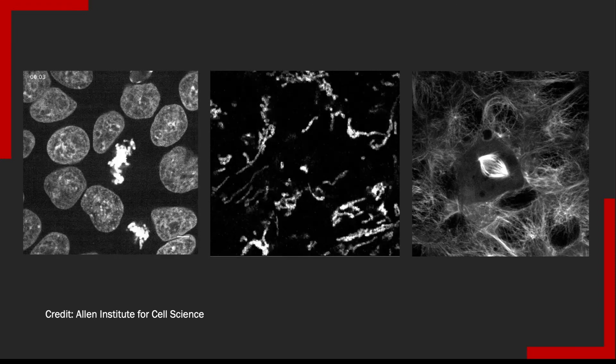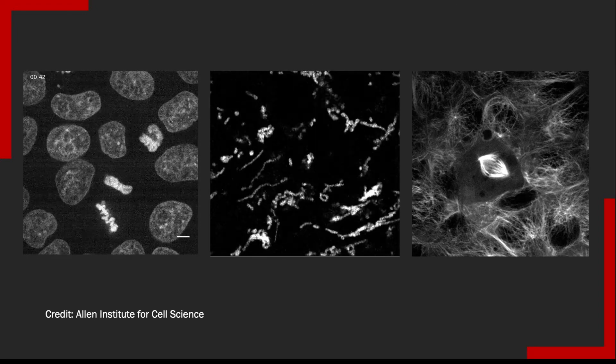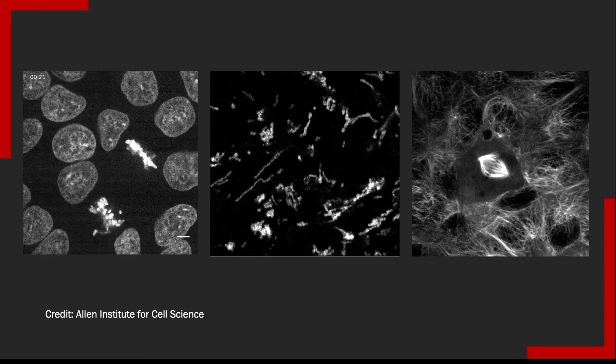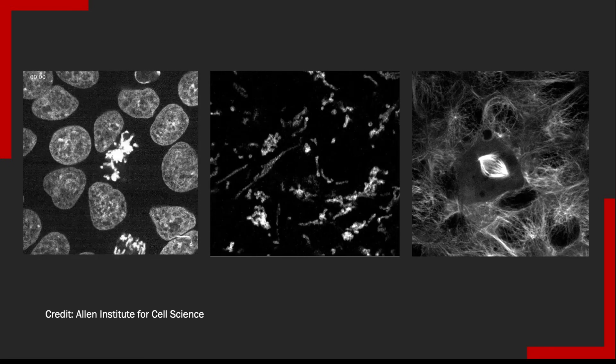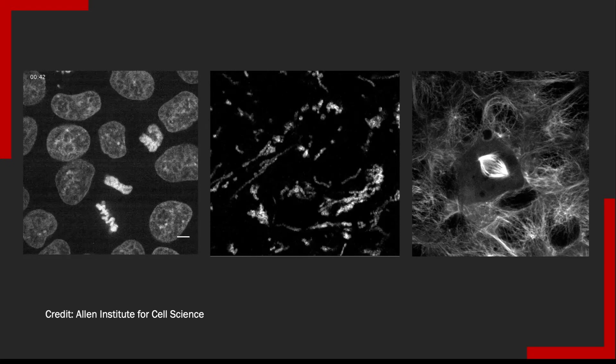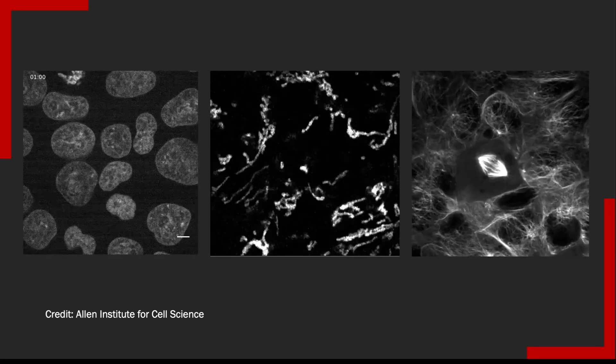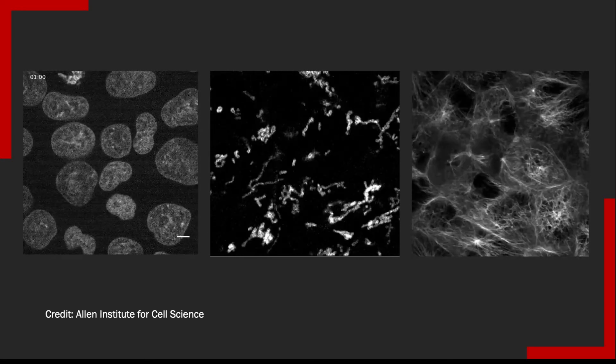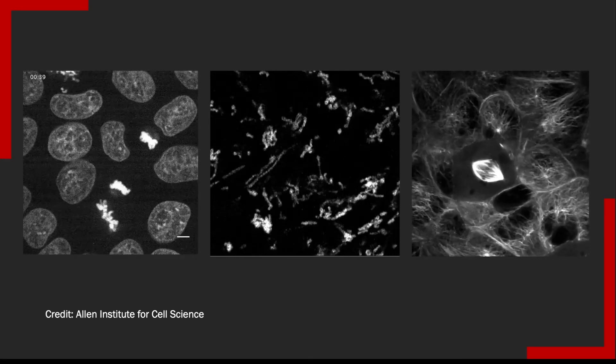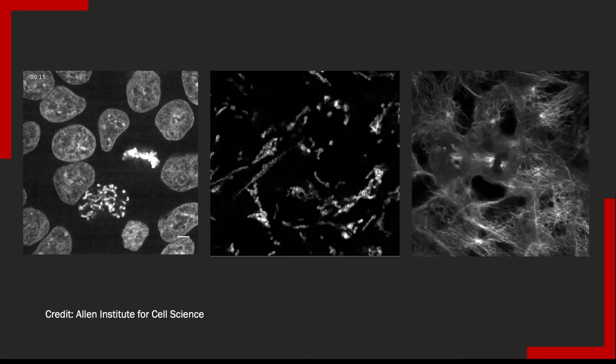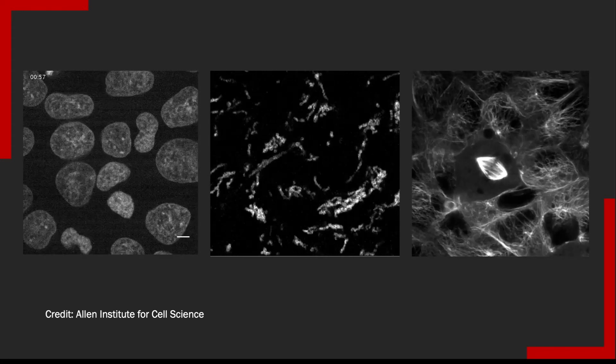How does that help us? It helps us because then we can look at lots and lots of healthy cells and get a good idea of what a cell is supposed to look like. By then making cells unhealthy in lots of ways, like adding a drug that damages their genes or one that damages their cytoskeleton, we can make a library of what cells look like when we change them in lots of ways.